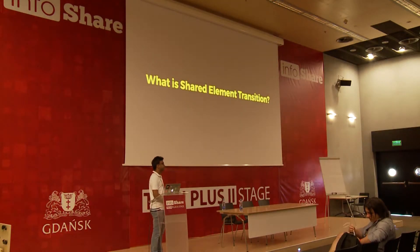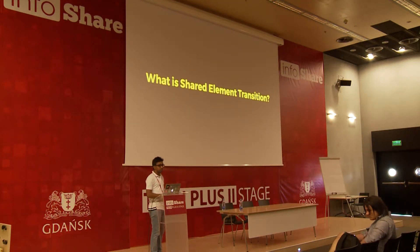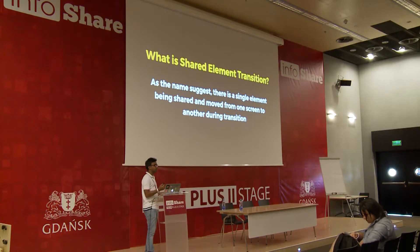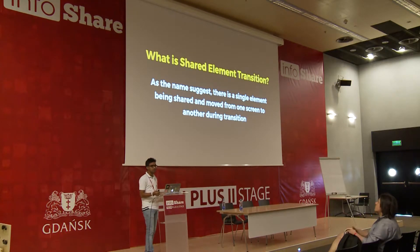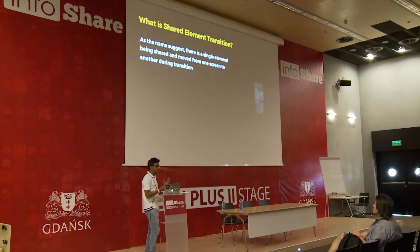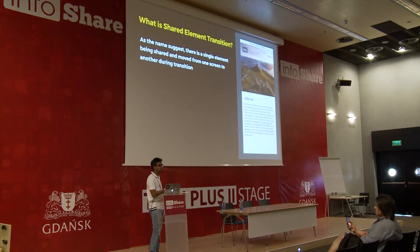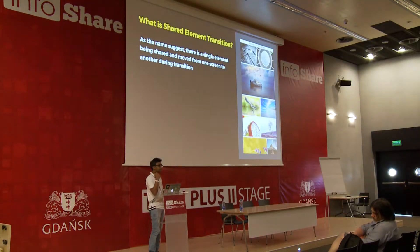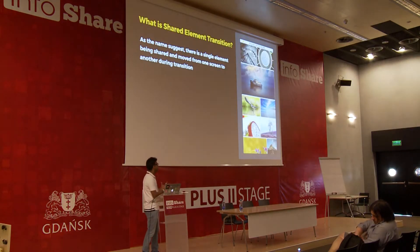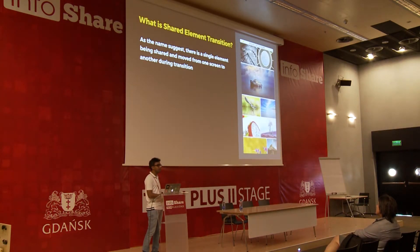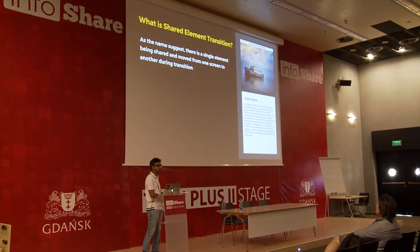What is shared element transition? As the name suggests, it is the same element shared between two screens, where the same element has changed from one position to another or from one size to another. To give an example, this is a demo app I built — a photo grid app. You click on a photo, it becomes the main image in the detail screen, and when you hit the back button, it goes back to its actual position. You know what should happen in the next screen, and when you hit back, it brings you back to the same context.